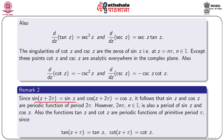Since sin(z + 2π) = sin z and cos(z + 2π) = cos z, it follows that sin z and cos z are periodic functions of period 2π. However, 2nπ where n is any integer is also a period of sin z and cos z. The functions tan z and cot z are also periodic functions of primitive period π, since tan(z + π) = tan z and cot(z + π) = cot z.